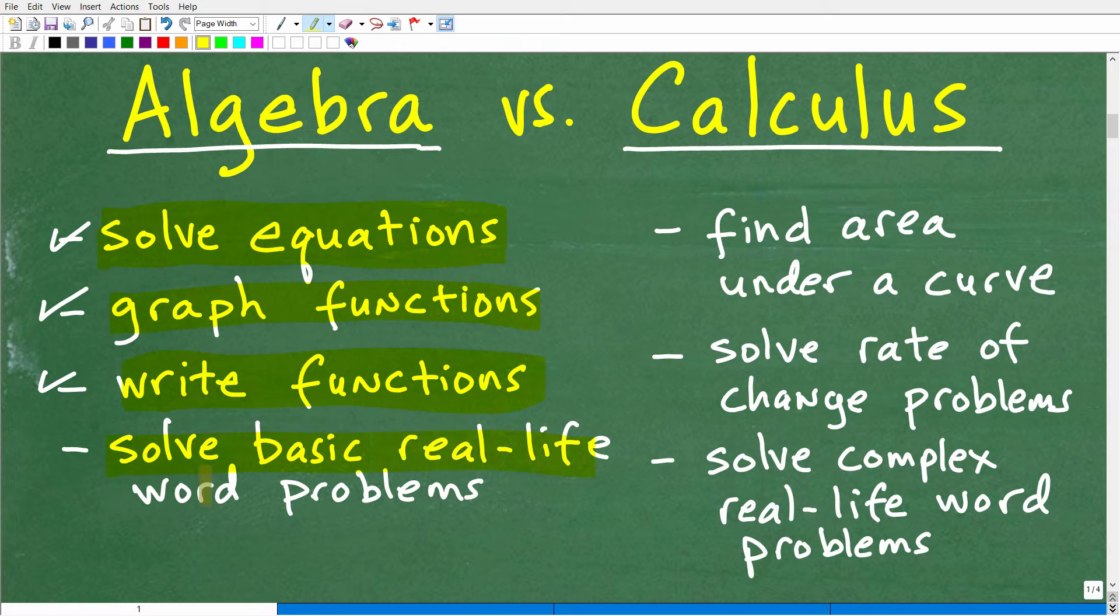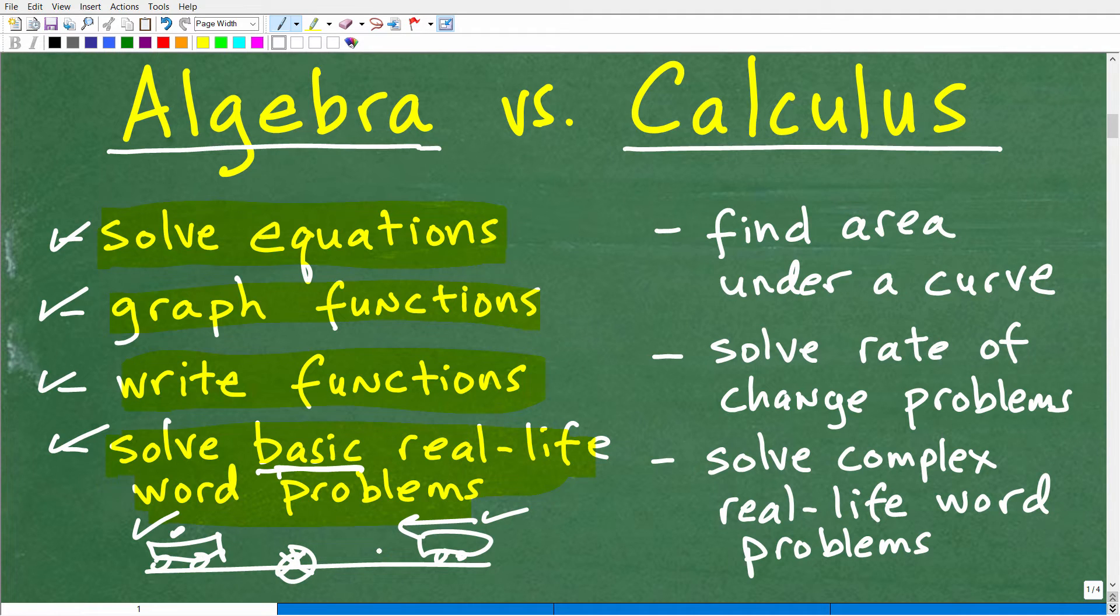And then lastly, in algebra you do a lot of word problems. We solve these basic real-life word problems. I'm using the word basic because you'll see here in the second one, I compare this to calculus - it's much different. You learn how to solve word problems that a lot of students go, why am I even doing this? Like that old word problem with the trains: one train left at 5 p.m., the other train left at 3 a.m. going this direction. This train's going at this speed, this train's going at this speed. When are they going to meet? What distance down the track? A lot of people would be like, why would I need to learn how to solve a problem like this? It doesn't really have a lot of real-life application. But I can tell you right now, it does. These are more basic type of real-world problems.